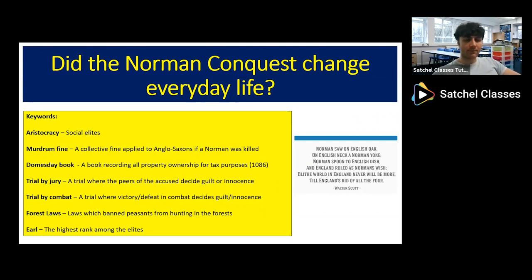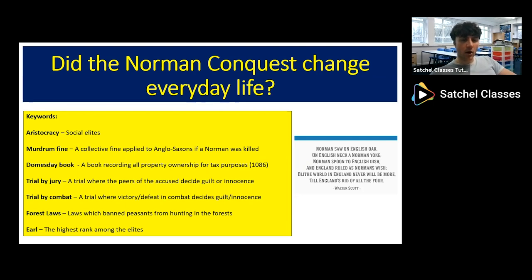Next is the 'murderum fine.' If you've studied law and order under the Normans, you'll have heard of this. It was a famous collective punishment applied if a Norman lord was found killed or assassinated. The fine was applied to everyone in the village or town where the Norman had been killed — a brutal form of collective punishment, like a teacher punishing an entire class for one student's misbehaviour.